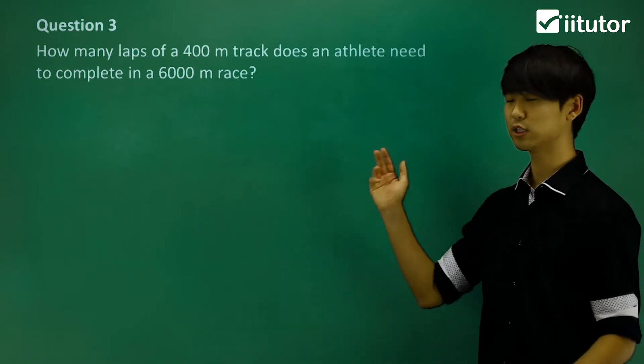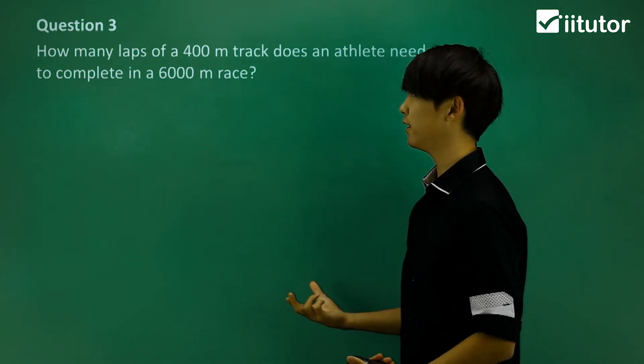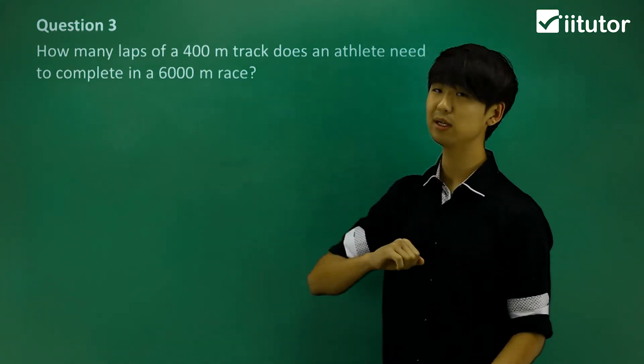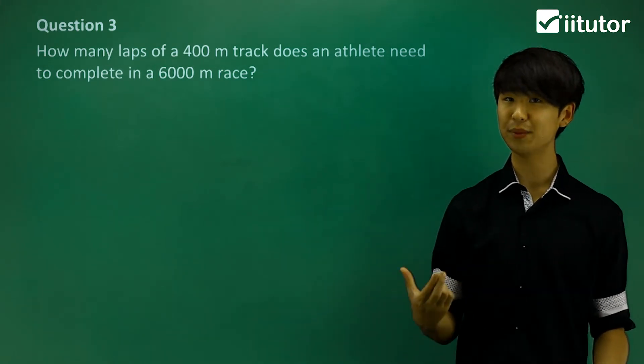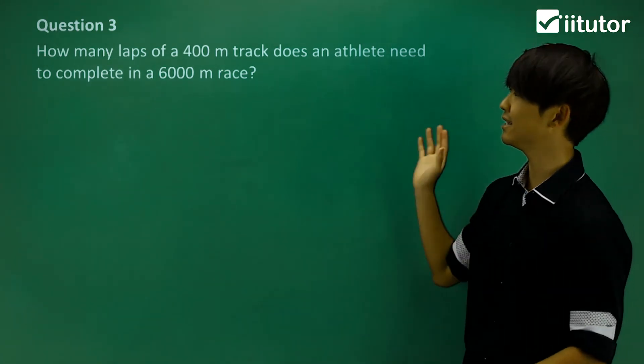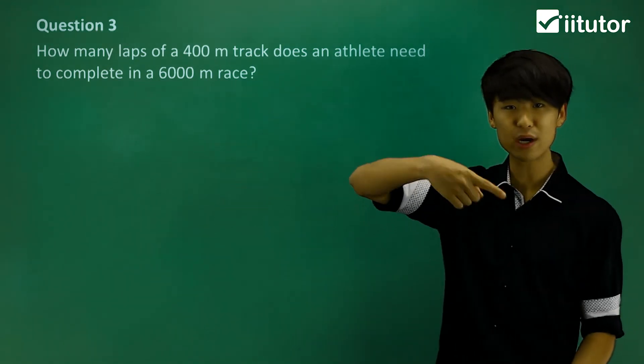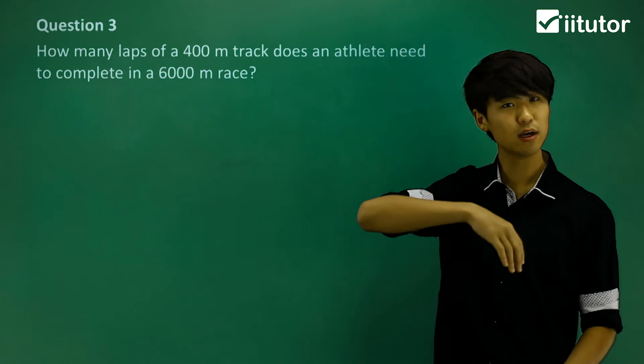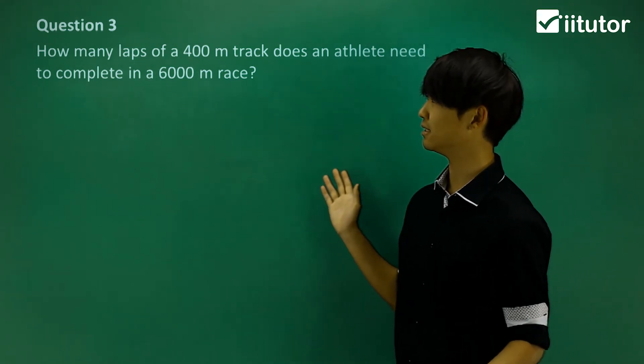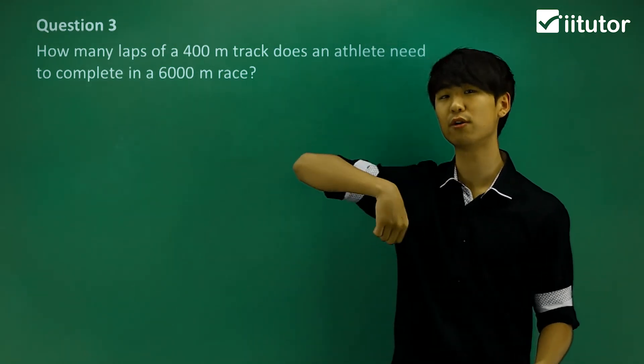Now if we take a look at question three, we've got more of a realistic question. How many laps of a 400-meter track does an athlete need to complete in a 6,000-meter race? We have a track that's 400 meters, but the race is 6,000 meters. So how many laps are we going to do around the track?